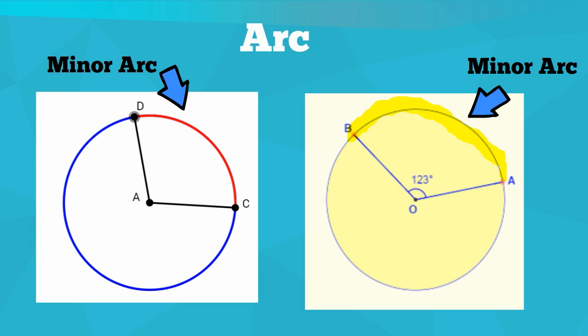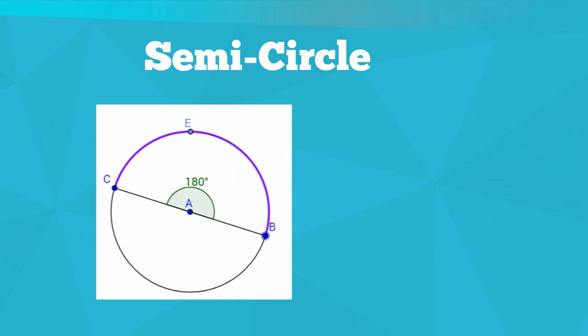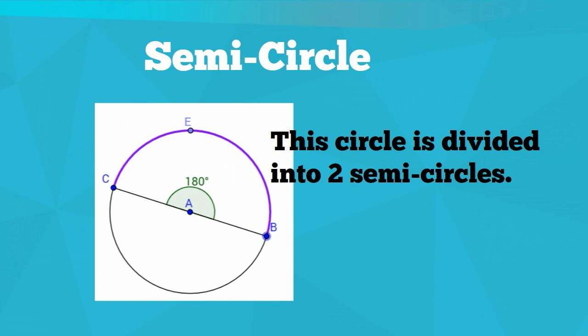A major arc is an arc with a distance greater than 180 degrees. A semicircle is an arc with a measure of exactly 180 degrees.